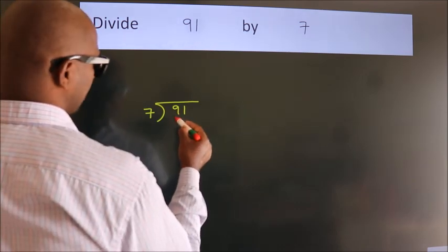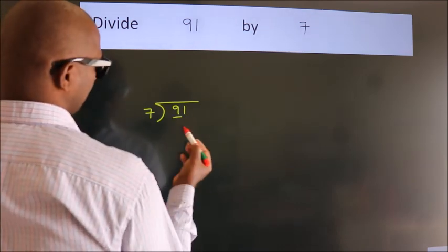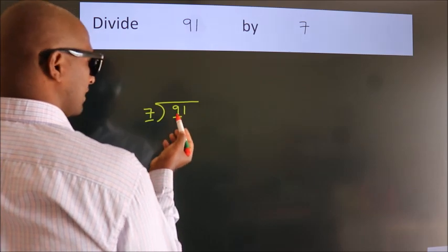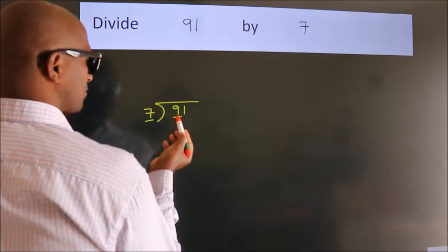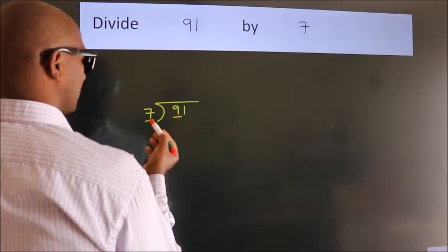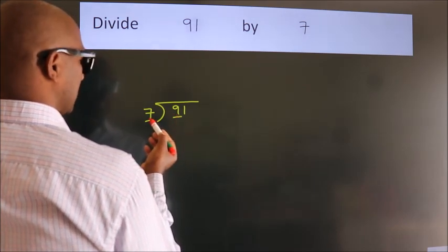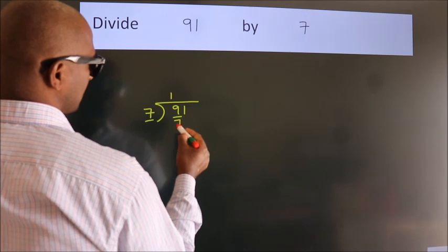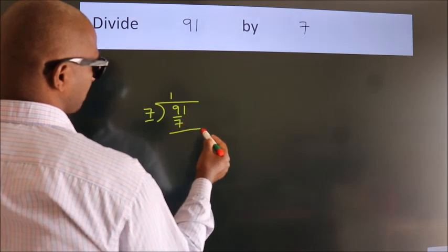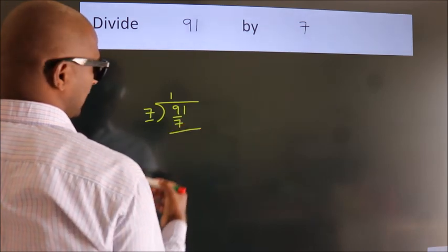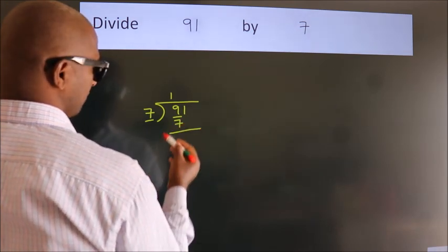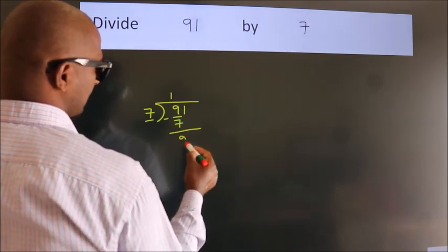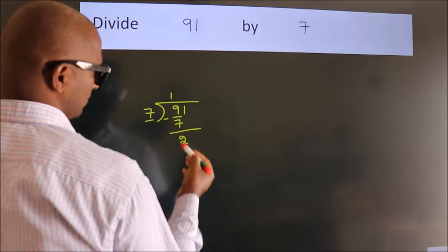Here we have 9, here 7. A number close to 9 in the 7 table is 7 ones, 7. Now we should subtract. We get 2.